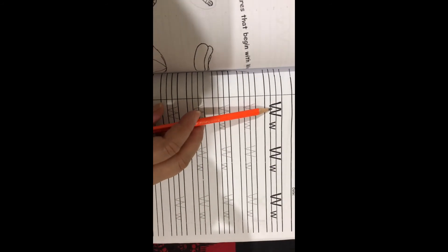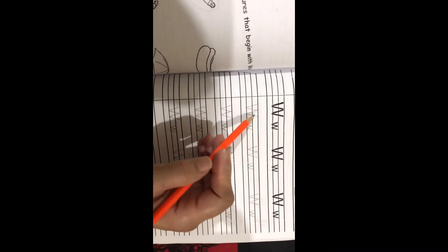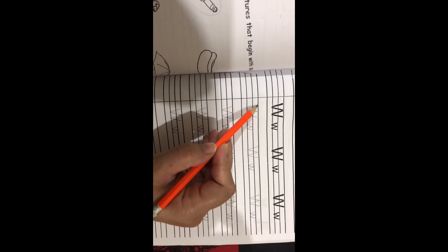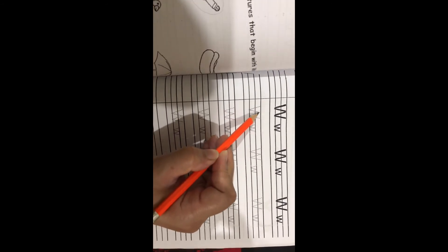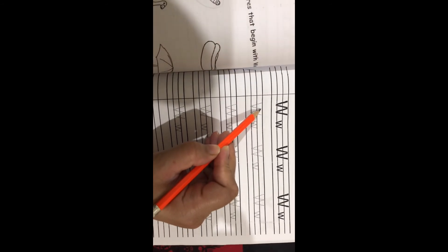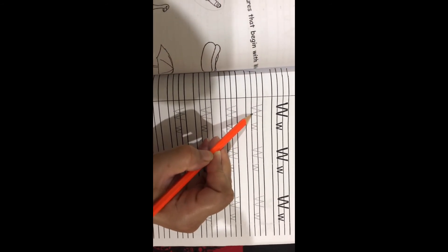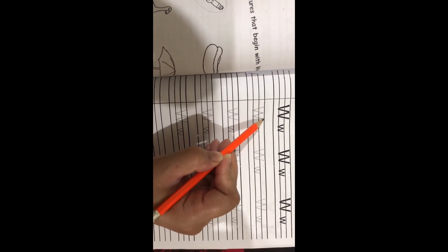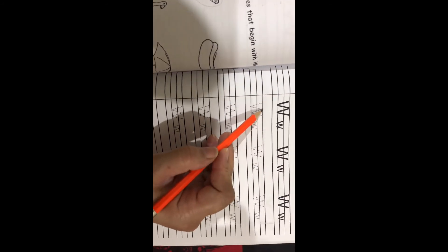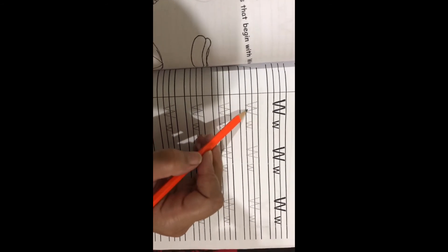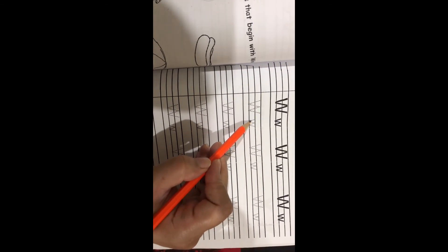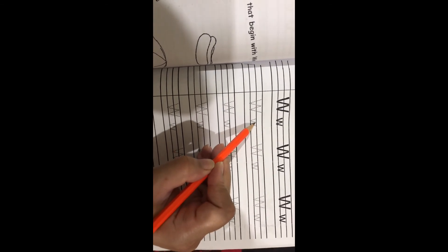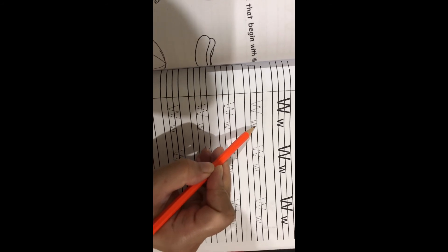And here you will write down uppercase and lowercase. Uppercase always starts with the first line, come down, touch the third line, go up, touch the first line, go down, third line, go up on the first line. Yes, uppercase W always comes on the first three lines. The lowercase, it comes on the two middle lines. Okay.